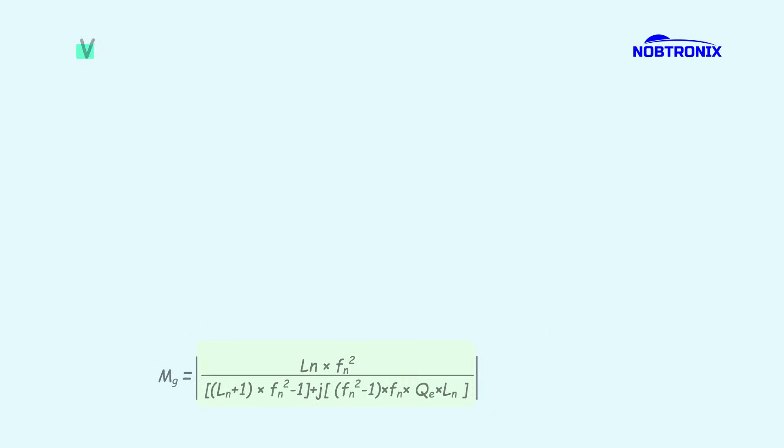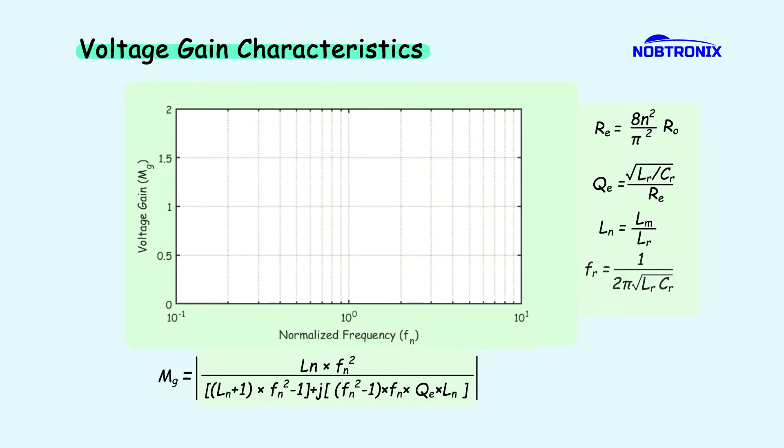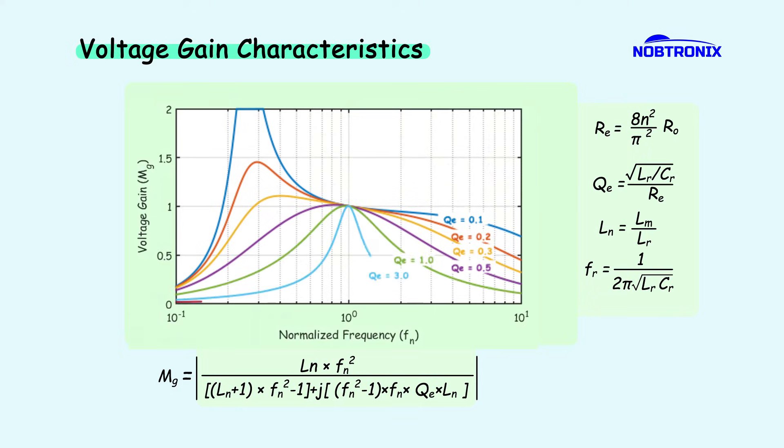Now that the voltage gain equation is established, let's visualize it by plotting the gain curve. In this relationship, if the values of resonant inductor and capacitor remain constant, increasing the output load decreases the quality factor. As seen in the plot, the voltage gain curve becomes narrower.